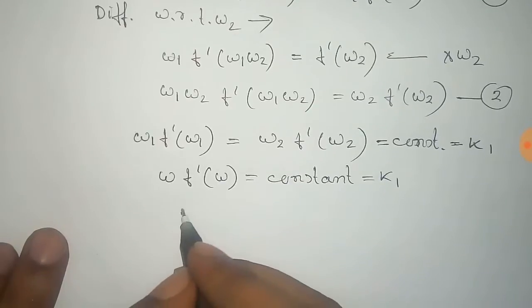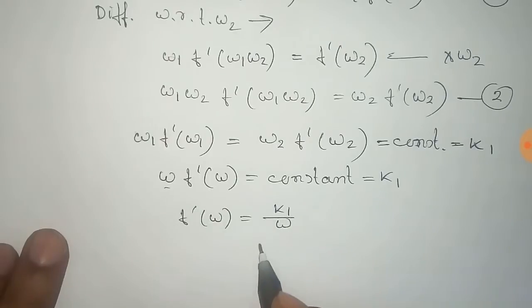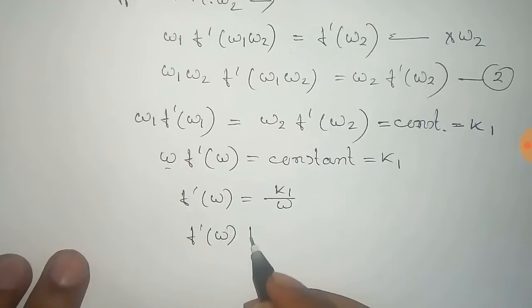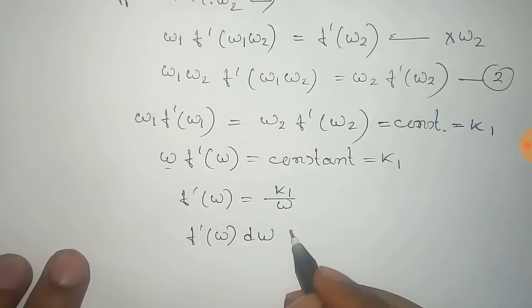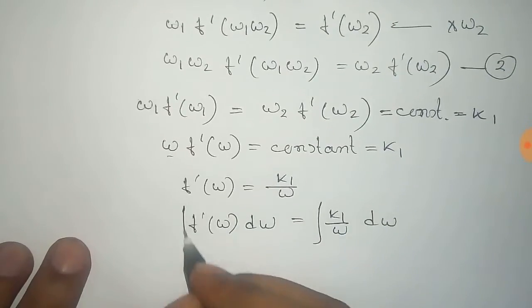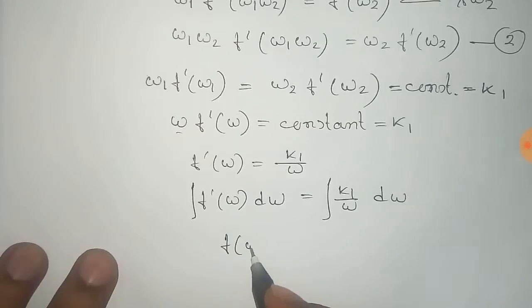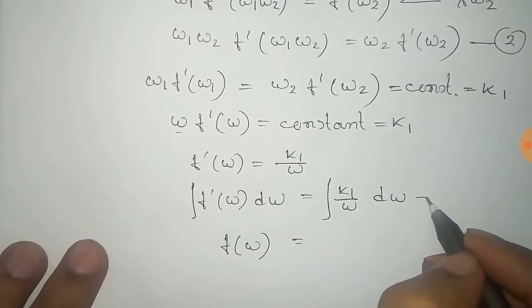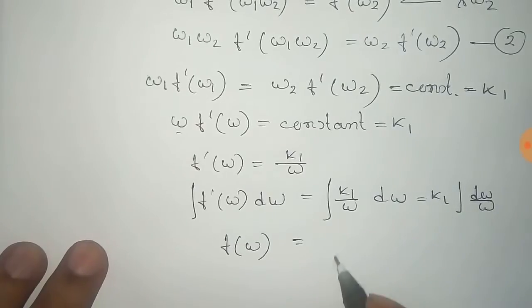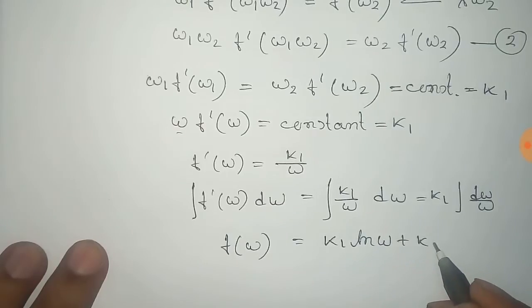From this equation we get f'(Omega) equals k1/Omega. Multiplying both sides by dOmega and integrating both sides, we get f(Omega) equals k1 times the integral of dOmega/Omega, which equals k1 · log(Omega) plus a new constant k2.